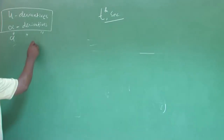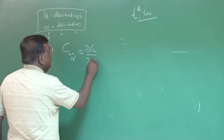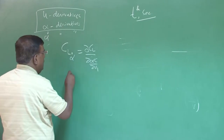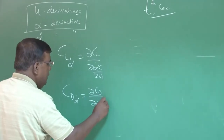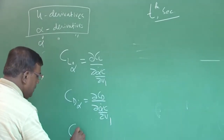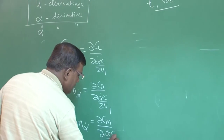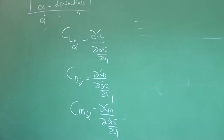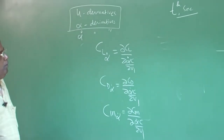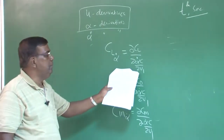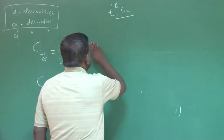What are those derivatives? We will try to find C_l_alpha_dot, which is d(C_l)/d(alpha_dot · c/(2u_1)), and C_d_alpha_dot, which is d(C_d)/d(alpha_dot · c/(2u_1)). By now you know why we put alpha_dot · c/(2u_1): because alpha_dot has a dimension and we want to operate in a non-dimensional quantity, so alpha_dot · c/(2u_1) is a non-dimensional quantity. With this understanding, let us see how we model it.